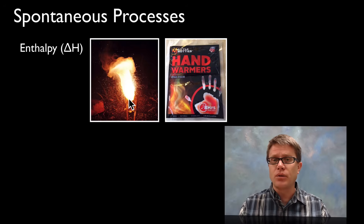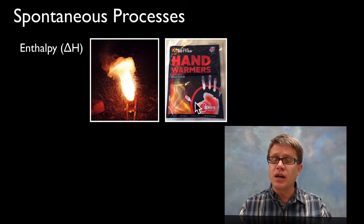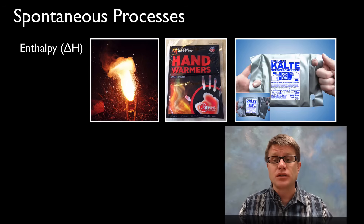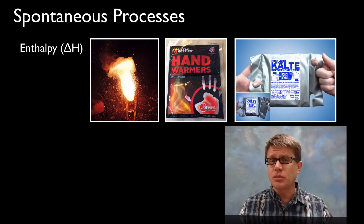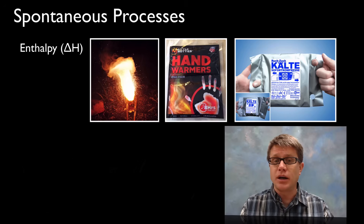In a thermite reaction, the reactants have more energy than the products — it's a downhill reaction, so we'd expect it to occur spontaneously. Likewise, if we were to rust iron, we have more energy before than after; that energy is released into the surroundings. But sometimes you'll have exceptions to that rule. A cold pack, for example, occurs spontaneously but is actually consuming energy, so it has a delta H that's a positive value. We can't just rely on enthalpy alone.